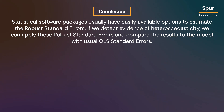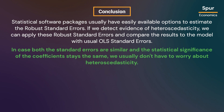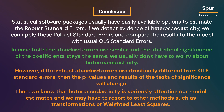Statistical software packages usually have easily available options to estimate robust standard errors. If we detect evidence of heteroscedasticity, we can apply these robust standard errors and compare the results to the model with usual OLS standard errors. If both are similar and statistical significance stays the same, we usually don't have to worry about heteroscedasticity. However, if robust standard errors are drastically different, then p-values and significance results will change, and we may have to resort to other methods such as transformations or weighted least squares.